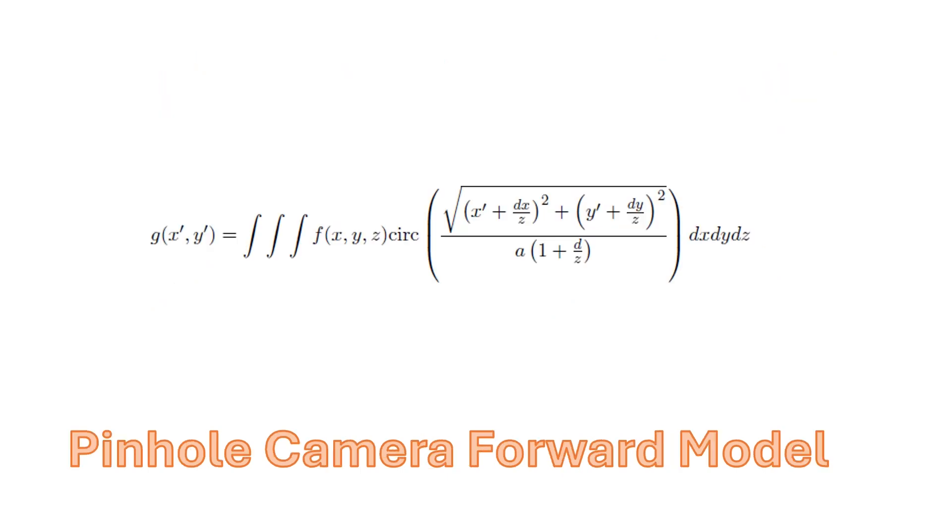That gives us now our first forward model for an imaging system: that the measurement data is the integral of the object distribution against the visibility function as the impulse response for the pinhole camera. So that's a computational imaging system. We have a computational model for how the pinhole camera behaves. In the next lecture, we'll turn it into a discrete model, but for now we can analyze characteristics of this model and evaluate this as an imaging system.